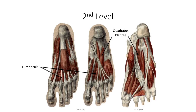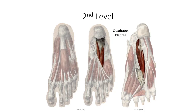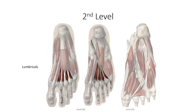The second plantar layer lies deep to the first and is entirely within the central compartment. The first muscle is the quadratus plantae, originating off the plantar surface of the calcaneus deep to flexor digitorum brevis, but inserting on the tendon of flexor digitorum longus as it runs obliquely through the central compartment. Quadratus plantae plays a role in toe flexion but, more importantly, realigns the pull of the flexor digitorum longus tendon, redirecting it more posteriorly to correct inward rotation. Paralysis of quadratus plantae is therefore one cause of pigeon-toed gait.